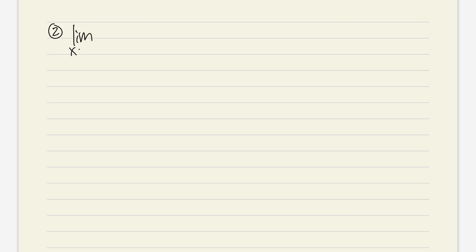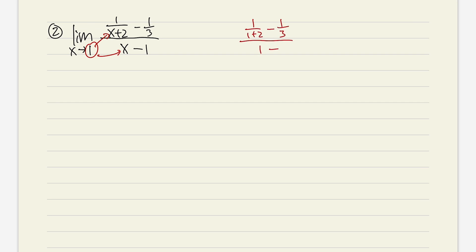In this calculus lesson, let's take a look at more examples on how we can evaluate limits algebraically. This is a continuation from last time. The limit as x is approaching 1, and we have 1 over (x plus 2) minus 1 over 3, all over x minus 1. As always, we plug in this number into all the x's. We get 1 over 3 minus 1 over 3 over 0, giving us 0 over 0, meaning we have to do more work.